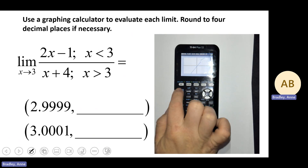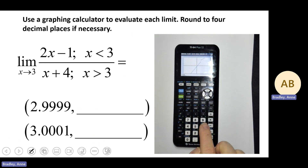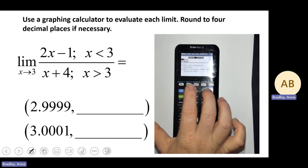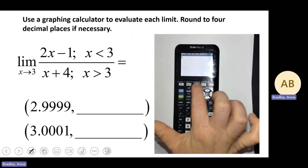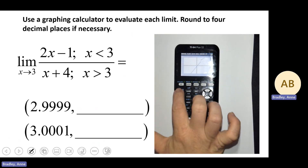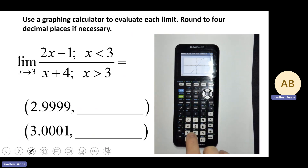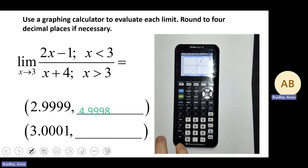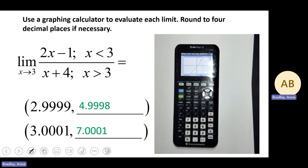Let's test it: second trace, value 2.9999 from the left, and then 3.0001 from the right. We can see the output values do not converge on the same numerical value, and for that reason our answer does not exist.